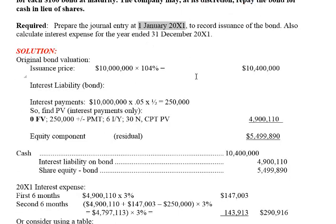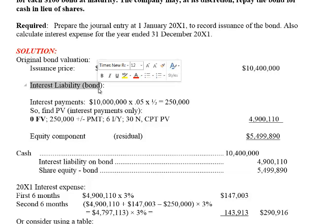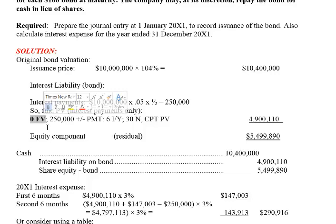So how do we figure out the journal entry at the date we issue this convertible bond? We're going to take the original issue price of the bond to figure out how much cash the investor is going to give us — $10,400,000, because it's 4% over and above the face value. When calculating the bond liability, we're not calculating the present value of the face value of the bond, because the issuer does not have to pay back the face value — it's a mandatory conversion. They can just give you shares. Because it's at the issuer's option, we only calculate the interest liability on the bond for the liability piece. We put in a future value of zero in our calculator because they don't have to pay back the lump sum.